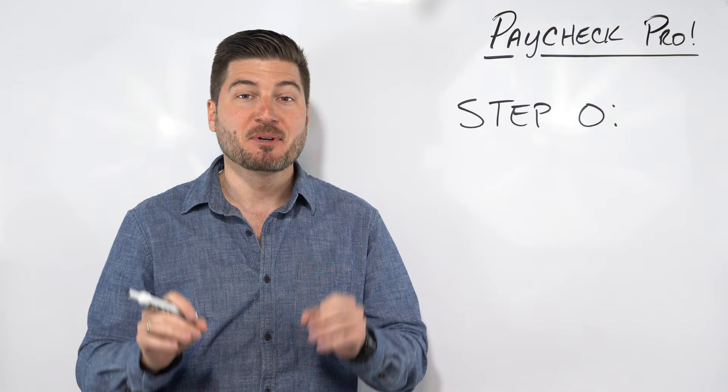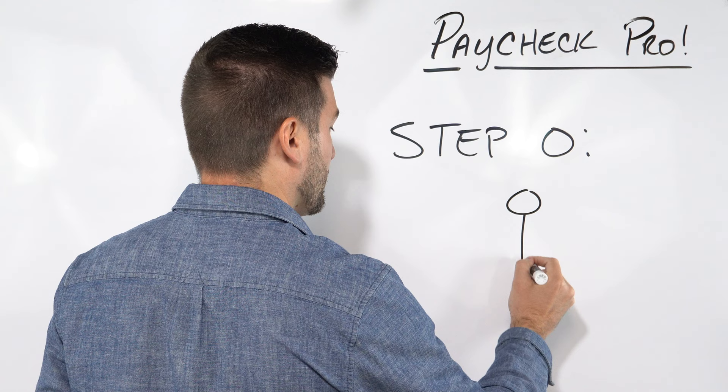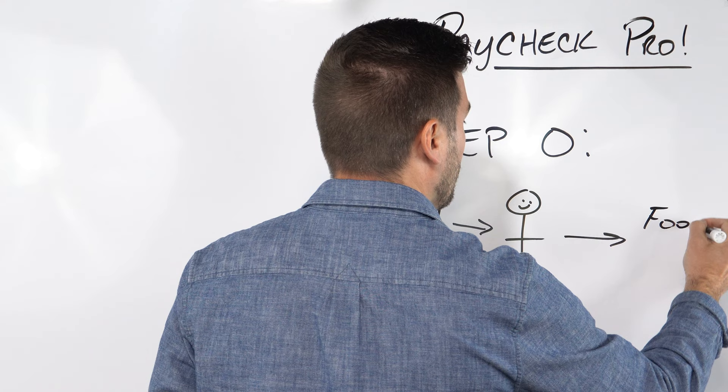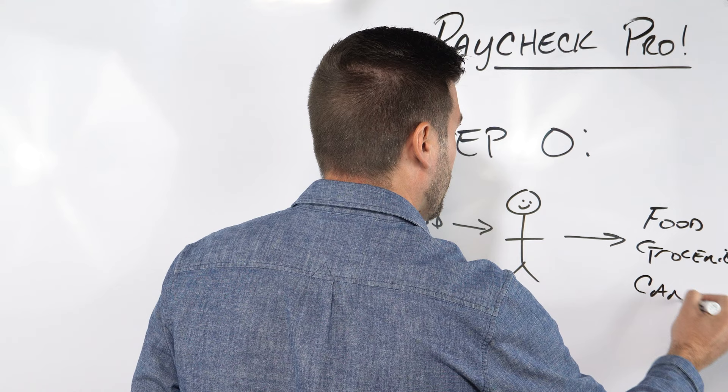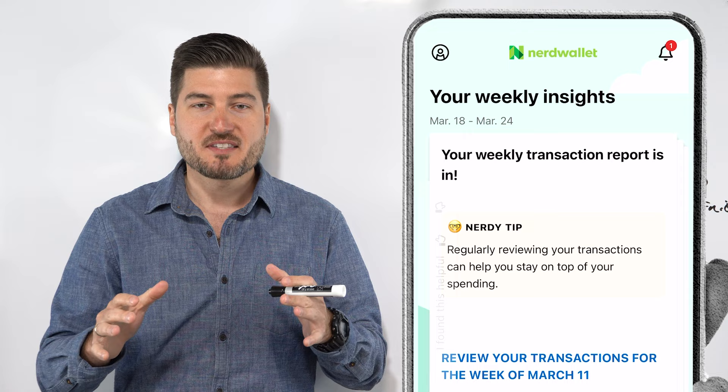Before we can do anything with our paycheck, we need to get a baseline understanding of how much money we have coming in versus how much money is going out. Here's you. You worked all week, and it's Friday. You get your paycheck. You're happy. You have money coming in, and then you also have money going out. This could be for multiple different things. This could be for food, groceries, car payments, bills, etc. So there's many different ways to do this, but here at NerdWallet, we have a free app. Use this app to track your income and expenses to get a better understanding of how much money is coming in versus how much is going out.